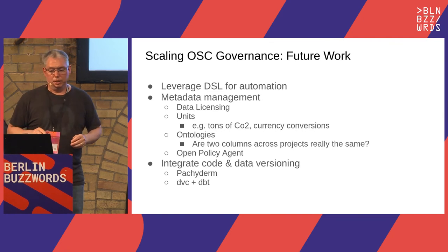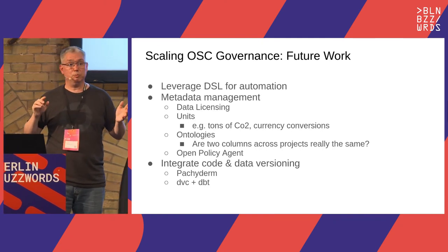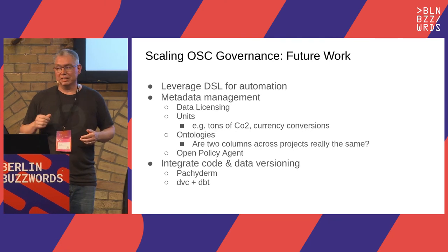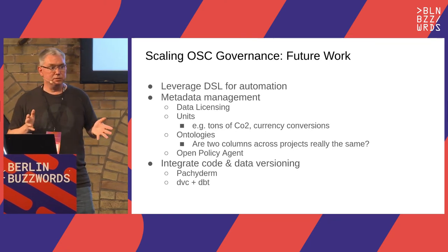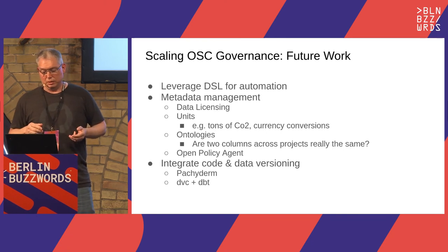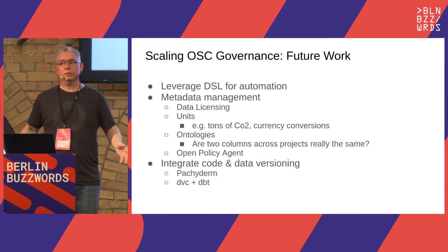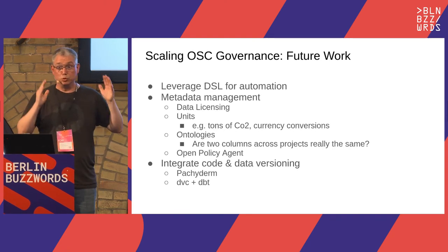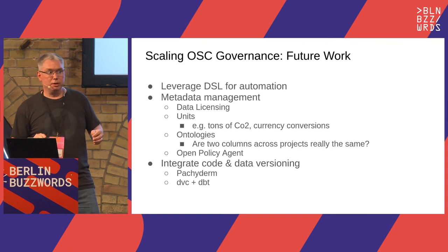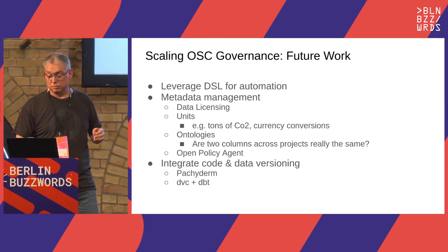What's future work? I wrote that DSL to support automation but haven't actually written the automation yet — though just having it has been more human readable, so it's helping already. We really want to do more higher-level metadata, like tracking licensing units — tons of CO2 versus pounds of CO2, currency conversions — and ontologies for fields and columns so that if two projects both claim to represent emissions, we can determine they're actually the same thing. We're also looking at tools that work with Open Policy Agent, and integrating code and data versioning more — looking at Pachyderm and also things like DVC and DBT as alternatives.